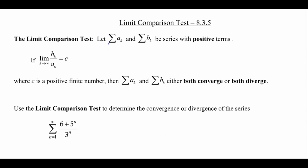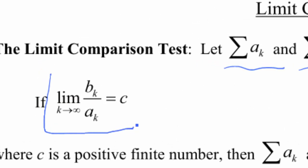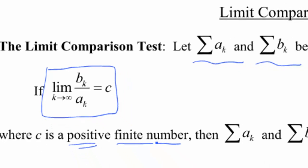So let a sub k and b sub k be series with positive terms. And you notice I put the word positive here in bold. If we know that the limit as k goes to infinity of b sub k over a sub k gives us some constant c, c has to be a positive and finite number, so finite just means something that's not infinity.